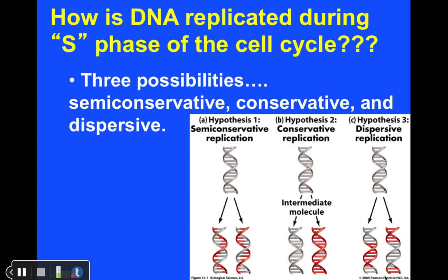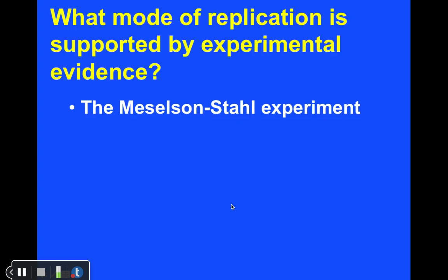These were the three hypotheses at the time. We now know that replication is semi-conservative in nature, but what experimental evidence backs up this hypothesis? This is another classic experiment: the Meselson-Stahl experiment.